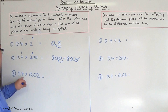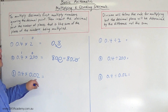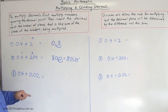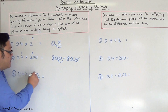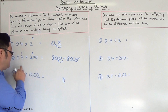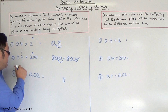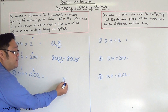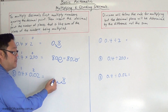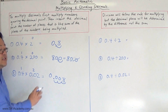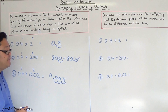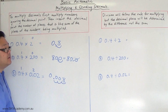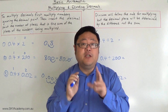Now for the third example, you need to take into consideration that there are two decimal places in one number and one decimal place in the other. 4 times 2 is 8. One plus two is three, so you go three decimal places in — one, two, three — and fill in the placeholders with zeros. The answer is 0.008.